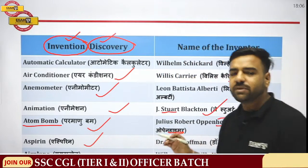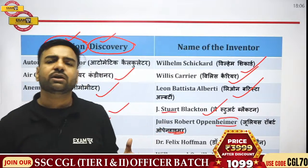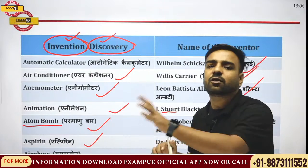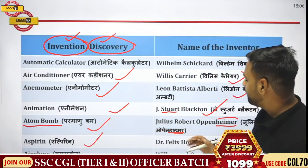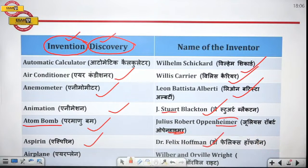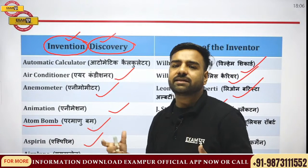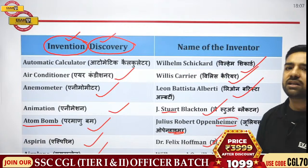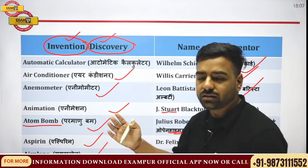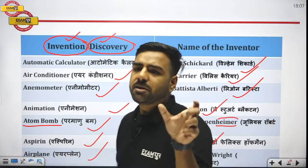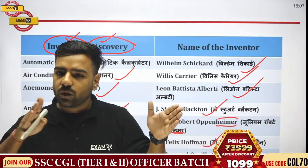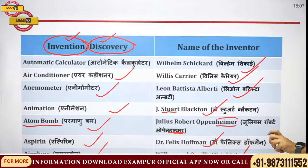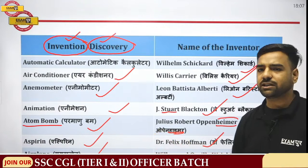Next is aspirin — examples include disprin or seridon, used to get relief from pain. Aspirin was discovered by Dr. Felix Hoffman. Then comes the airplane — everyone remembers this. It was discovered by the Wright Brothers. There were actually two brothers: Orville Wright and Wilbur Wright. Their surname was Wright, that is why we say Wright Brothers discovered the airplane.